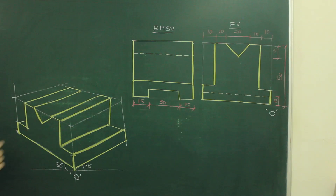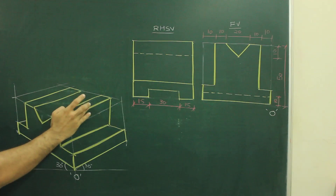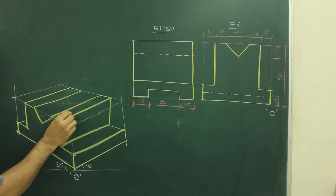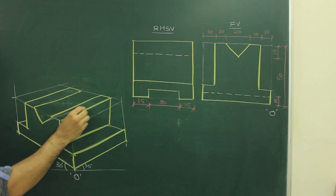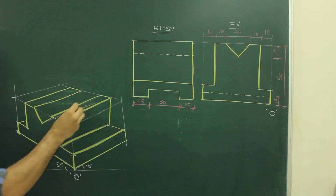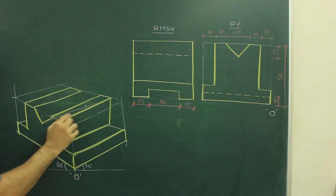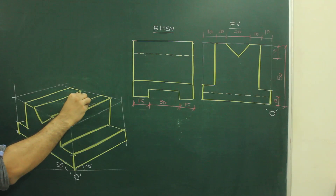Now after this, you have to think about this slope. If you see, there is a slope over here, so behind also there will be a slope, but we don't know the point. So what we can do — from this point, we can draw a line and we can mark 60 behind. How much do you have to go behind? 60, that is according to the width, and then it will join.